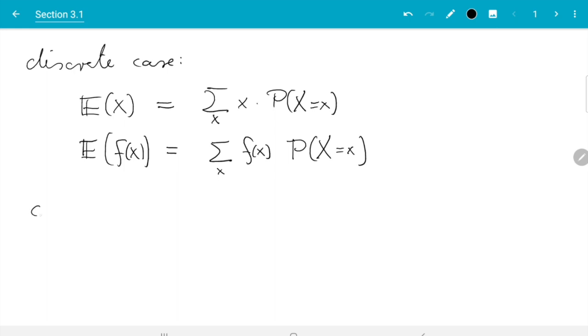So for the continuous case, like if x is normally distributed, in this case we have a quite similar formula. The expectation of x is something, but now instead of the sum, we have an integral over all possible values.